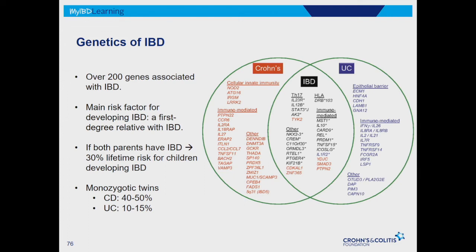But it's not all genetics. Monozygotic twins — identical twins born from one egg with all the same genes — show that the risk of both twins developing Crohn's disease is 40 to 50%, whereas with ulcerative colitis it's only 10 to 15%. So there's something else going on — environment or other factors we're not fully clear about. The take-home from this: it's not a guarantee.